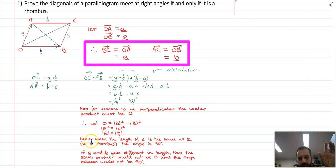Just some explanatory notes down the bottom there. Hence, when the length of A is the same as B, a rhombus, the angle is 90 degrees. If A and B were different in length, then the scalar product would not be zero, and the angle between would not be 90. There is our proof that the diagonals of a parallelogram meet at right angles, if and only if it is a rhombus. Probably just worth reiterating that there are many other proofs for this particular thing, but this is a proof using vectors, which is what we're learning about.